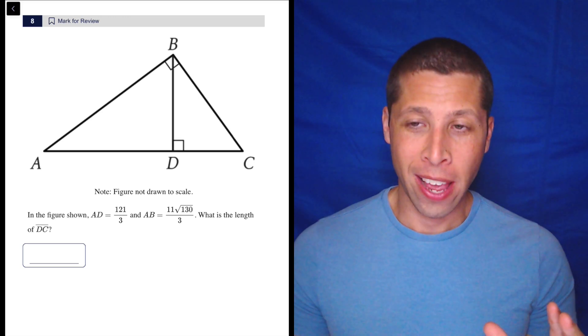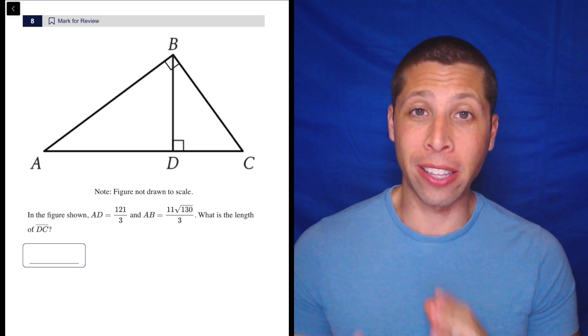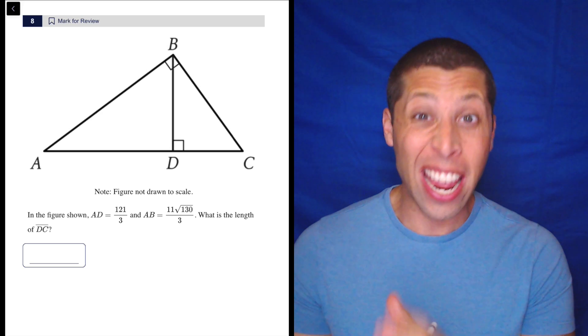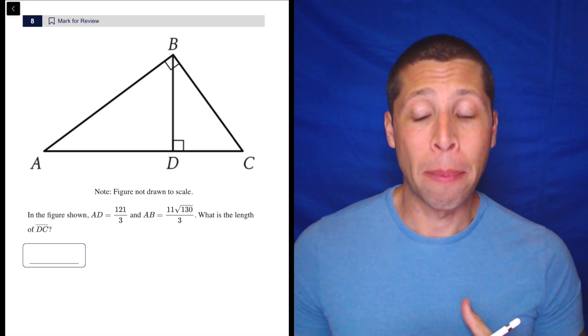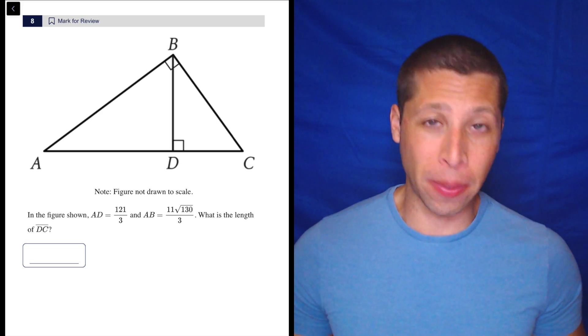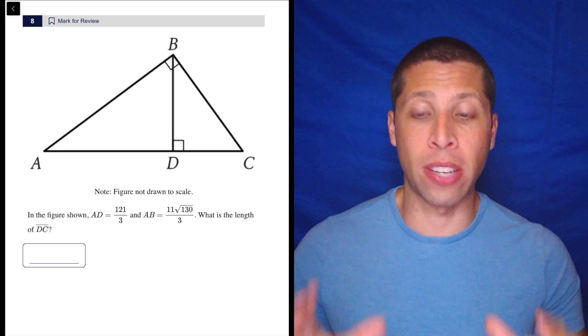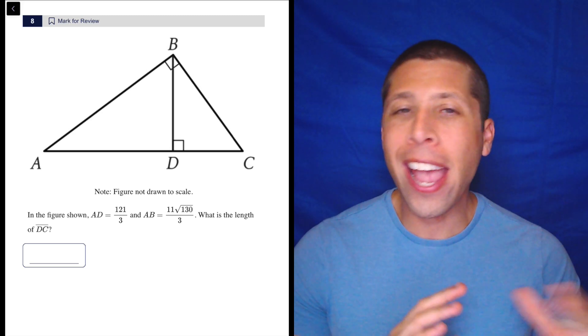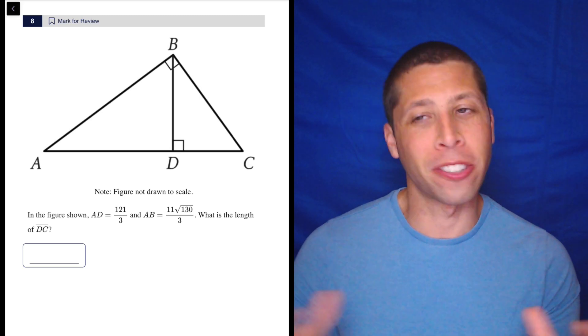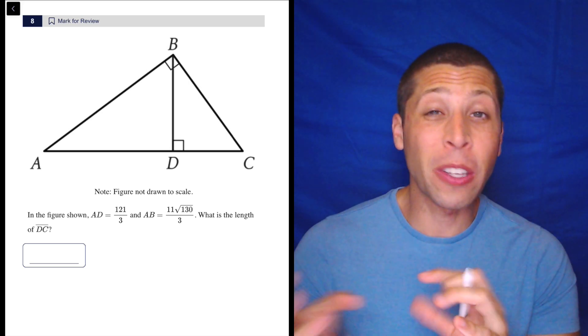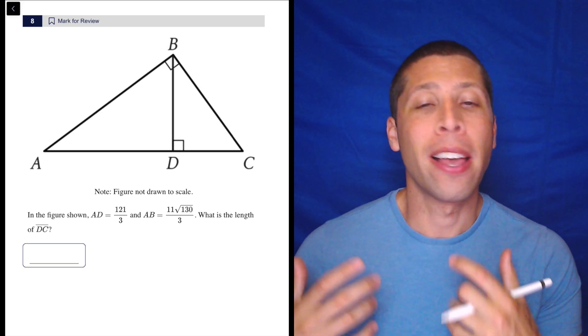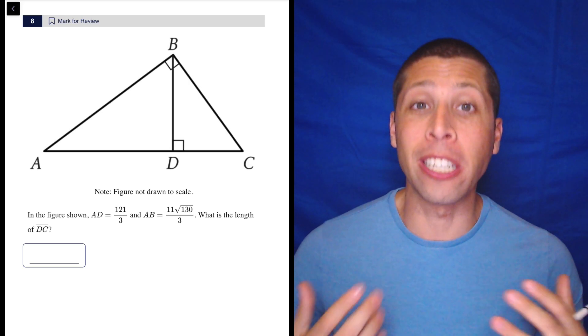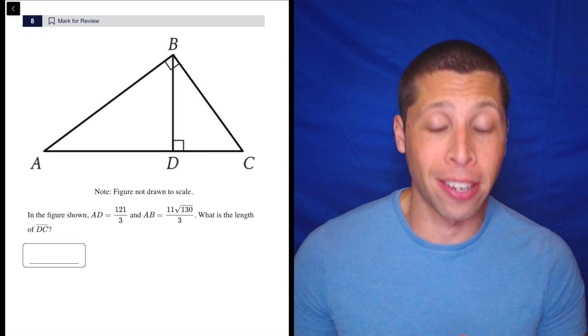Alright. So this is a hard question. I think it's a little out of place. Normally you wouldn't get this hard of a question in number eight of the hard module. It's a little early, but regardless, you could see something like this. And the first thing you should notice as soon as you see a picture like this is this is similar triangles. Anytime you got a geometry question and there's a couple of triangles, especially if they share sides and overlap, it's probably similar triangles and you're going to need to make a proportion of some kind to solve it.